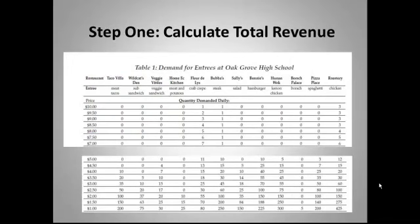Your first step then is to calculate the total revenues that each restaurant would bring in at each price, based on the number of students who would be willing and able to purchase the meal offered by that restaurant at that price. In other words, determined by the demand schedule.